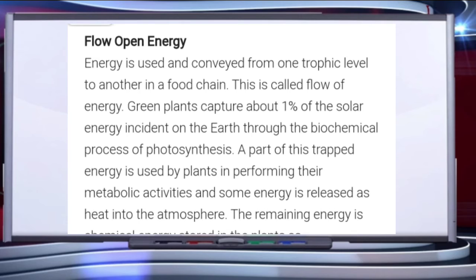To summarize: energy is used and conveyed from one trophic level to another in a food chain — this is called the flow of energy. Green plants capture about 1 percent of the solar energy incident on Earth through the biochemical process of photosynthesis. A part of this trapped energy is used by plants in performing their metabolic activities, and some energy is released as heat into the atmosphere.